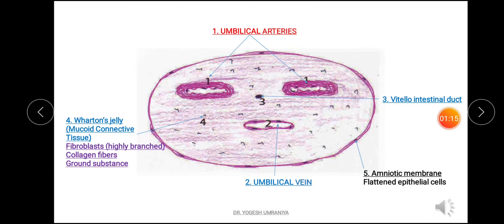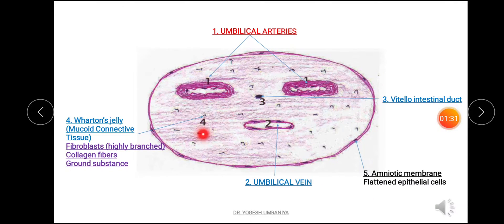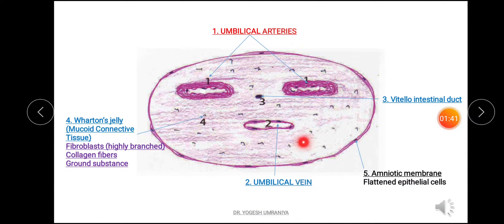Number 3 is the vitelo-intestinal duct, which is the duct connecting the yolk sac with the intestinal area. Number 4 is the mucoid connective tissue, also known as Wharton's jelly. This area is mainly occupied by highly branched fibroblast cells, collagen fibres, and ground substance.